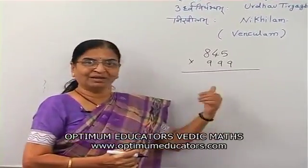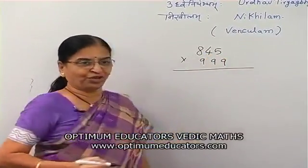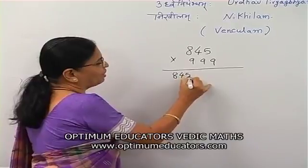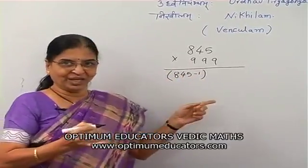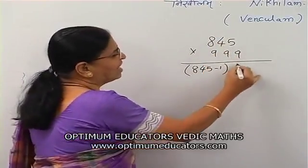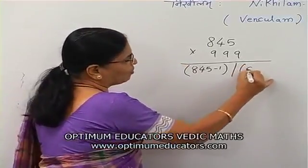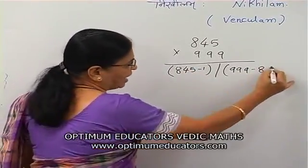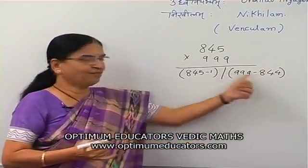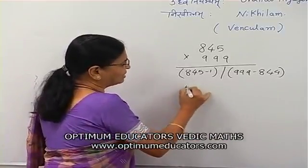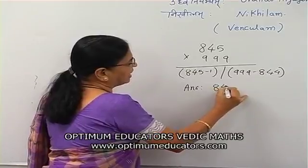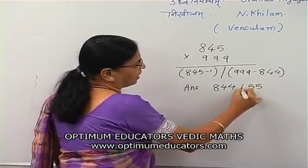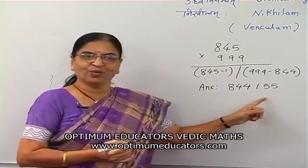Using the Eka-Niunena method from Level 2: 845 multiplied by 999. We take 845 minus 1 — that is, 1 less than the previous — giving 844. Then we subtract 845 from 999, which gives 155. So the answer can be written directly as 844155.